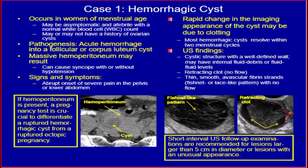Most hemorrhagic cysts resolve within two menstrual cycles. Ultrasound findings: cystic structure with a well-defined wall, which may have internal fluid-debris or fluid-fluid levels, retracting clot, no flow, thin smooth avascular fibrin strands, and a fishnet or lace-like pattern with no flow. If hemoperitoneum is present, a pregnancy test is crucial to differentiate a ruptured hemorrhagic cyst from a ruptured ectopic pregnancy. Short-interval ultrasound follow-up is recommended for lesions larger than 5 cm or with an unusual appearance.